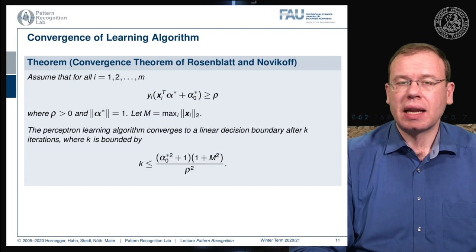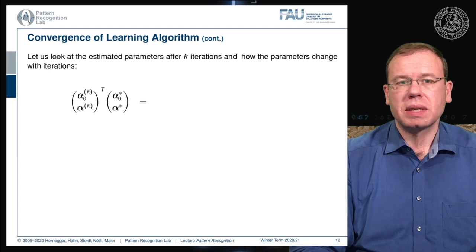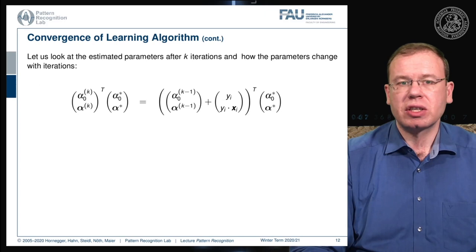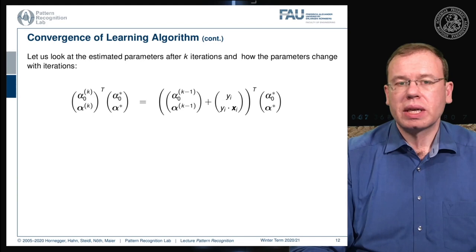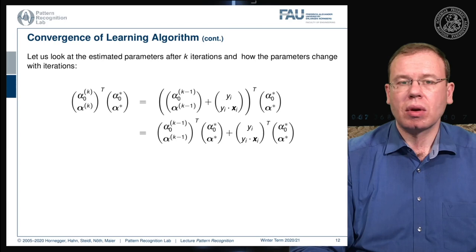An interesting observation is that the dimensionality of the features does not appear at all in this bound — it is completely independent of the dimension of the feature space. To derive the bound, we first look at the inner product of the current parameter set with the optimal one. The configuration at step k is created from step k-1 via the update with [yᵢ, yᵢxᵢ], which we can split using the optimal decision boundary.